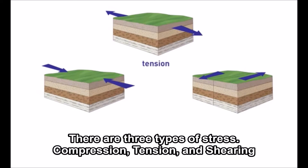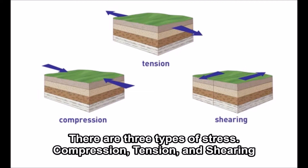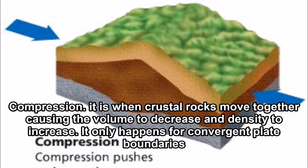There are three types of stress: compression, tension, and shear. Compression is when crustal rocks are pushed together, causing volume to decrease and density to increase. It only happens at convergent plate boundaries.